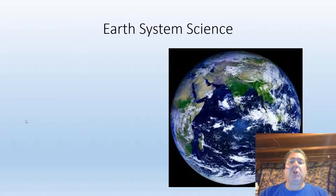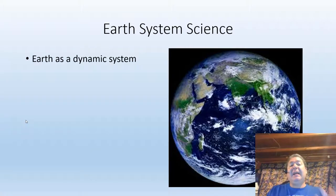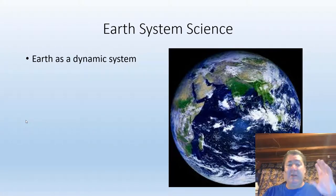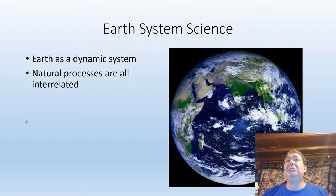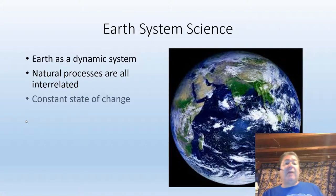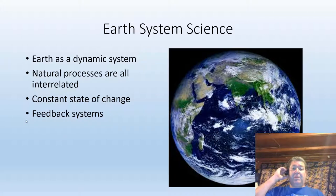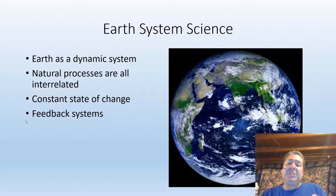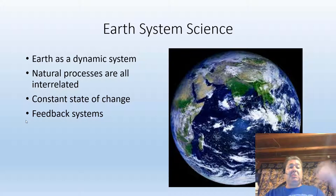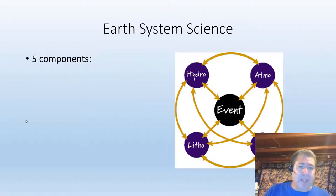Let's talk about Earth System Science. Earth System Science is the science of viewing the Earth as a dynamic system — not stagnant, not always the same. It views all natural processes as interrelated, connected, interacting with each other, and all in a constant state of change. They interact in very complex feedback systems — perturbations or changes in one system cascade and affect changes throughout other systems, which cause changes throughout other systems that may cause changes back to the first system.